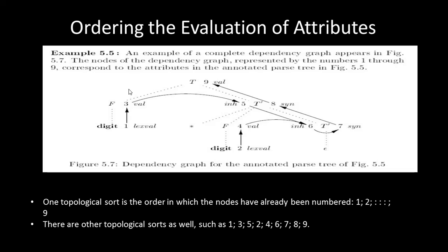Consider an example showing how we calculate the topological sort. The dependency graph has nodes numbered one through nine, showing how they depend on each other. One topological sort follows the order one, two, three, four, five, six, seven, eight, nine. Another valid topological sort is one, three, five, two, four, six, seven, eight, nine. Both are valid orderings of this given dependency graph.